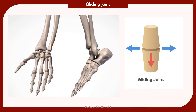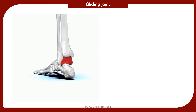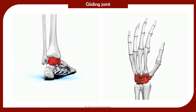A gliding joint allows bones to glide over each other, providing a little movement in all directions. Examples of gliding joints are the joints at the ankle and the wrist.